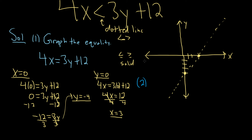You can pick any point that's not on the line. Let's pick (0, 0) — that's usually the easiest one. As long as your line isn't passing through the origin, you can always use (0, 0). If it is, just pick something else like (1, 1). You plug it into the original inequality, and if it's true, you shade where you picked it from — here, from the origin. If it's not true, you shade the other region.